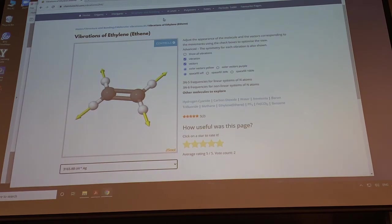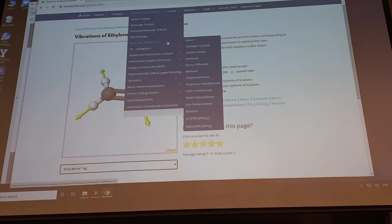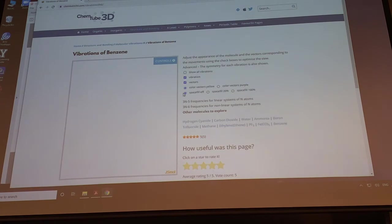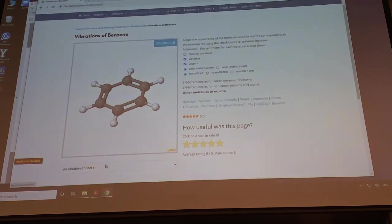So this is again your old friend chem tube here. If you go under structure bonding and molecular vibrations, it'll give you some examples here to do. I think benzene is in here too. Benzene is a good one to look at. Let's see if that pops up. Okay. Yeah, there it is. And then you can look at the frequencies here, frequency list.